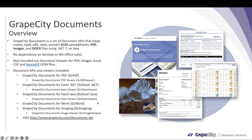GC Word is a Word API that helps to create Word documents, load existing documents, modify them, save them back, and convert them to other formats. GC Imaging, or GrapeCity Documents for Imaging, is our imaging API that helps to load images, create images, and add a lot of image processing effects.